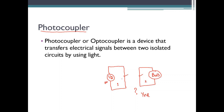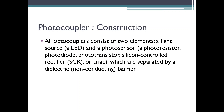Let's look at the construction. A photocoupler consists of two elements: one is a light source, normally an LED, and the other is a photo sensor. This photo sensor can be a photo resistor, photo diode, photo transistor, silicon controlled rectifier, or triac. Since we are familiar with the photo diode, let's consider the second part of the circuit as a photo diode. The first circuit has an LED and the second circuit, which needs the electrical signal, has a photo diode.